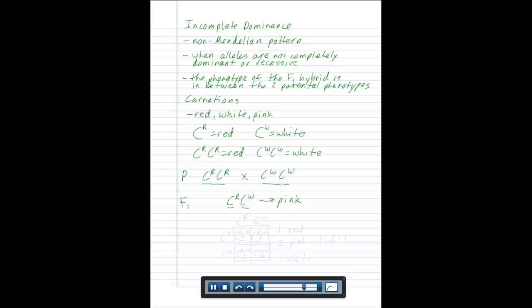Now what happens when we cross two pink individuals? Well, we'll use a Punnett square to find that out. We put one pink individual on the top and one pink individual on the side. We cross the two red alleles, a red and white allele, another red and white allele, and two white alleles.